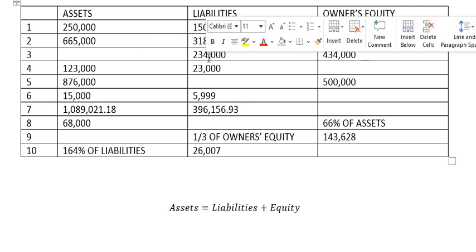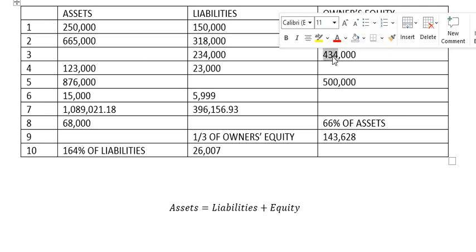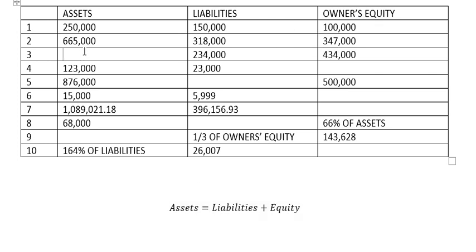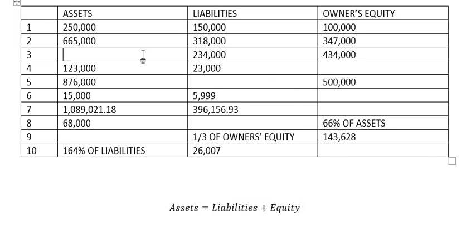The next one: we have Liabilities and Equity, and now we want to find Assets. So we just add the two numbers here and we got the final answer, which is about six hundred sixty-eight thousand.